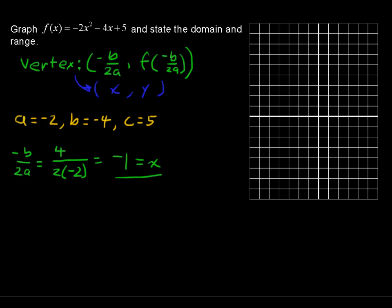Let's find the y-coordinate of the vertex. So that's this function evaluated at -b/2a, or this function evaluated at the value that we just found, that -1. So we have f(-1) is -2(-1)² - 4(-1) + 5. And simplifying that will give you 7.